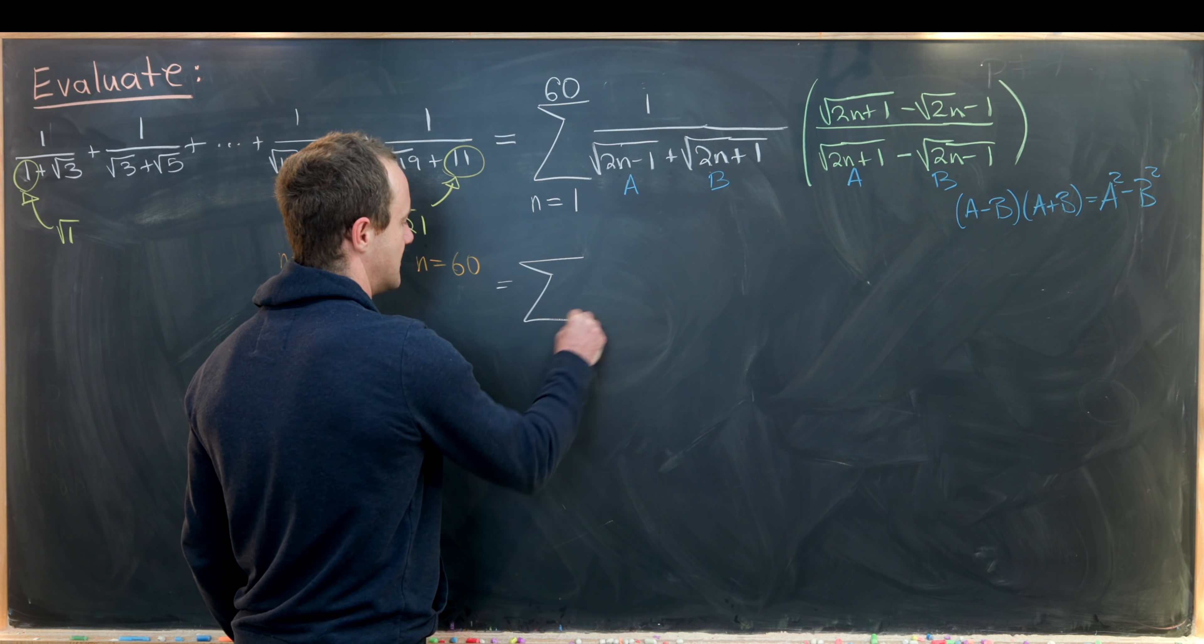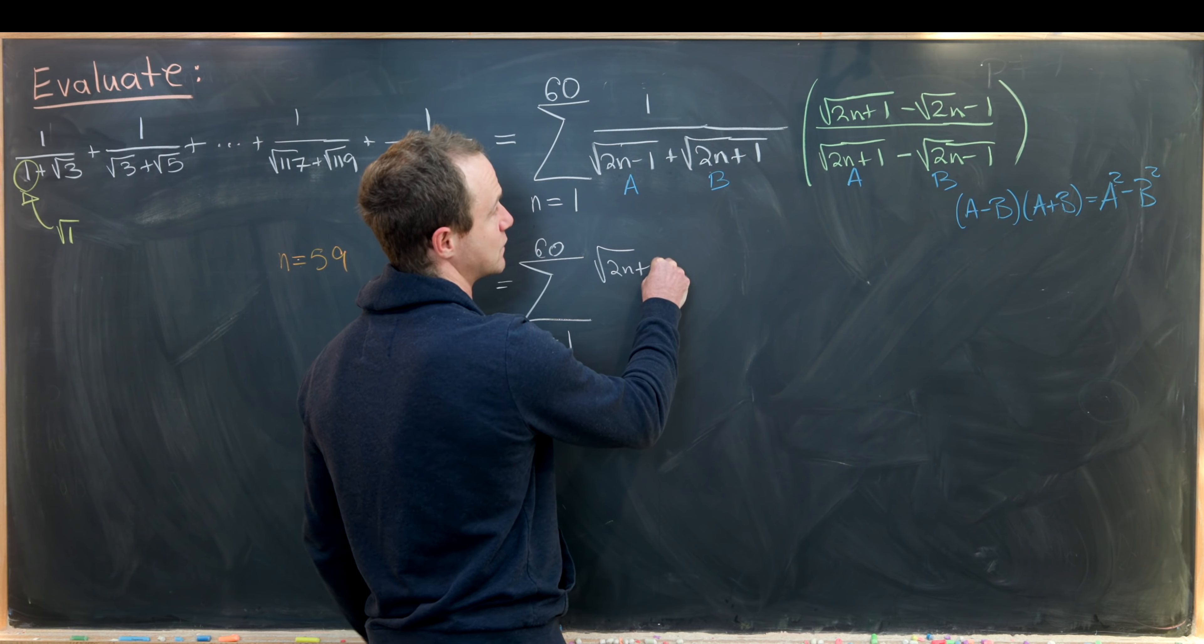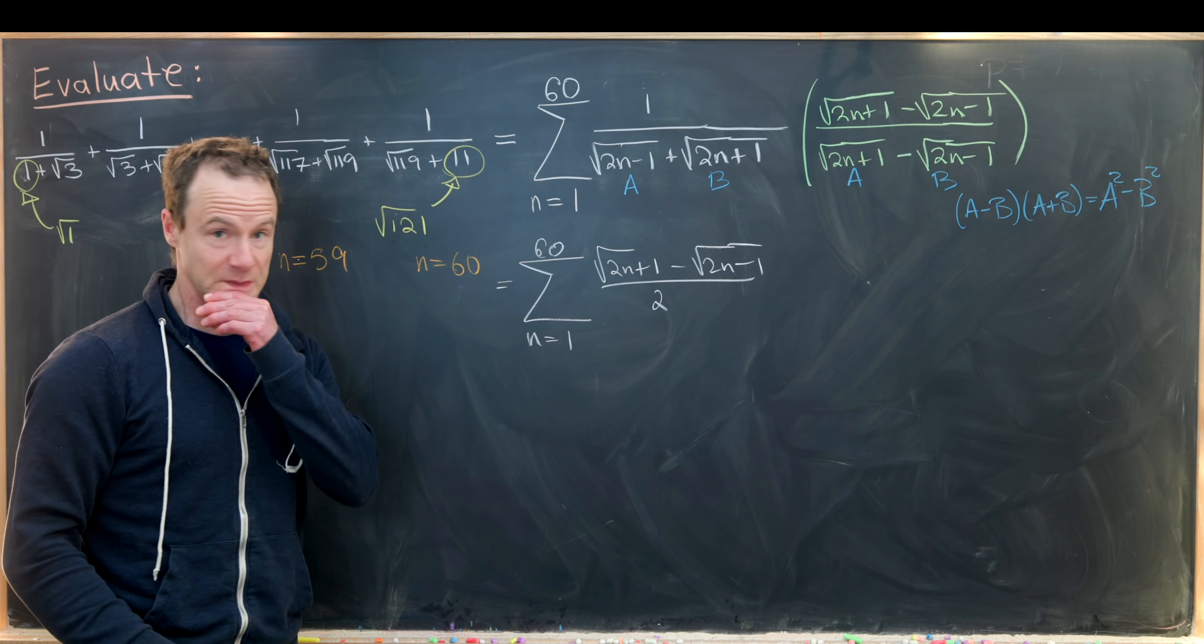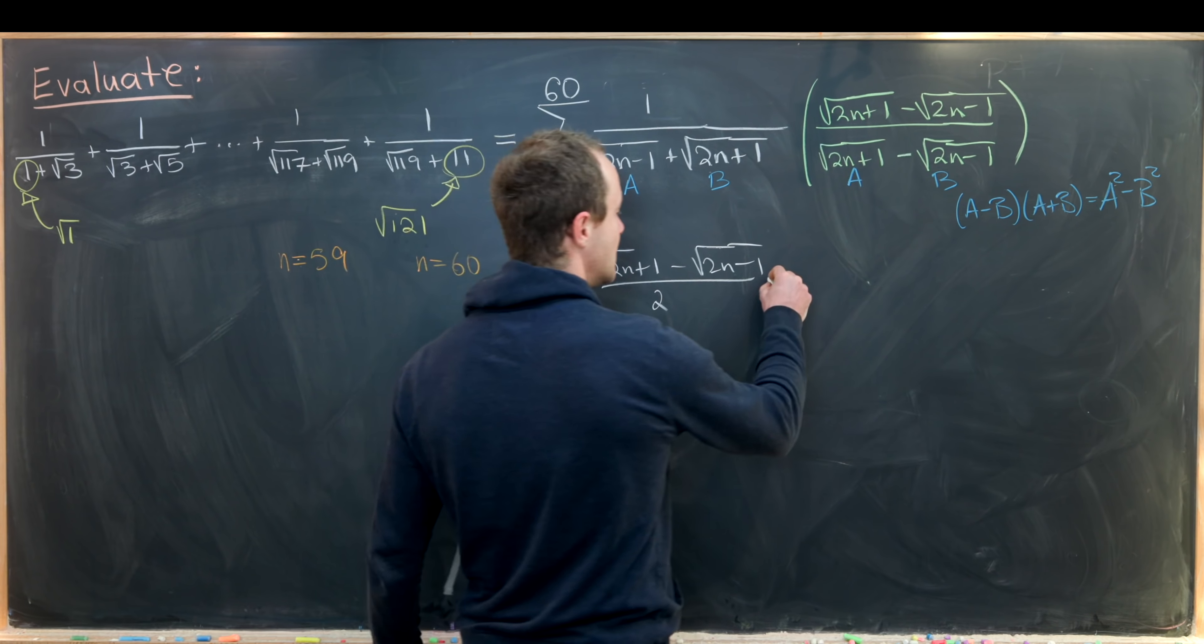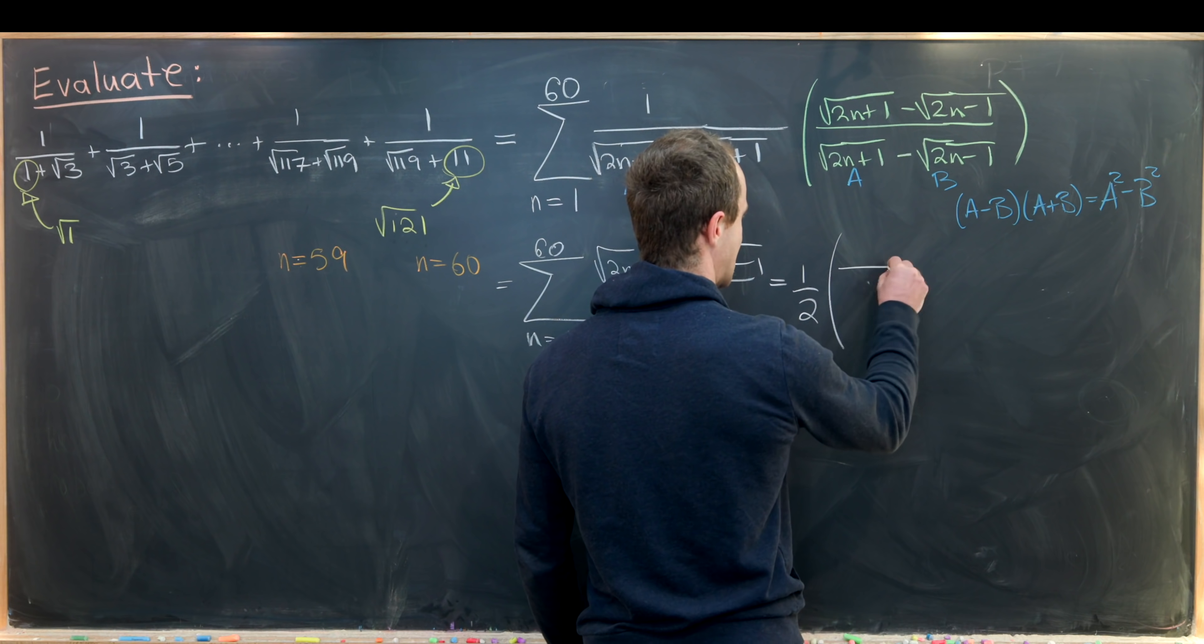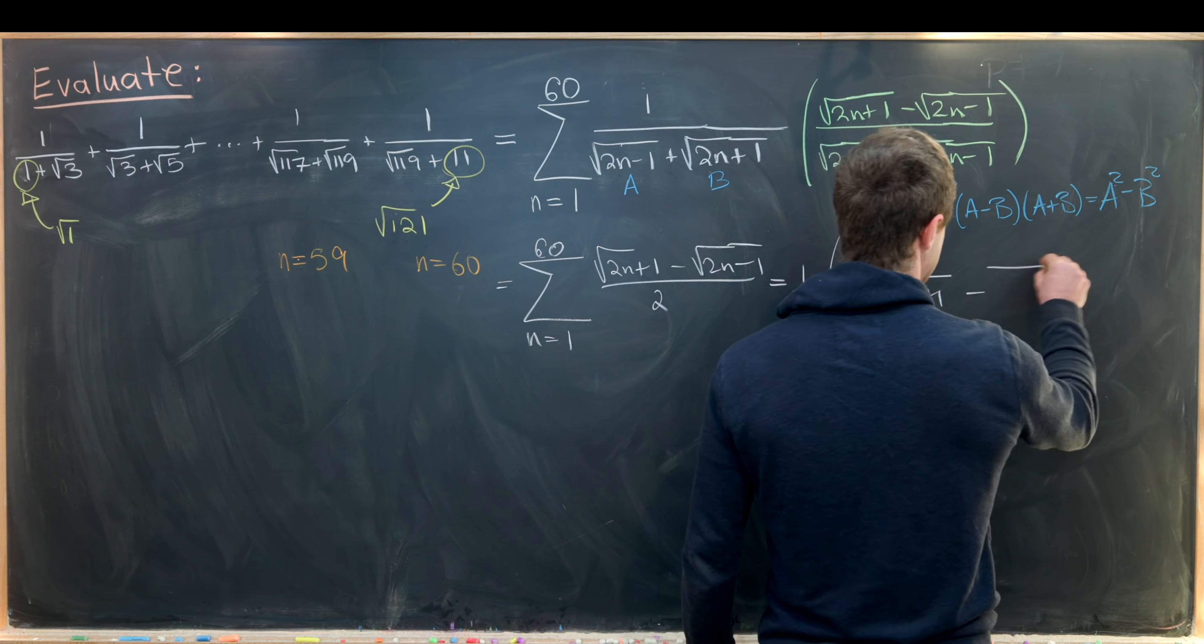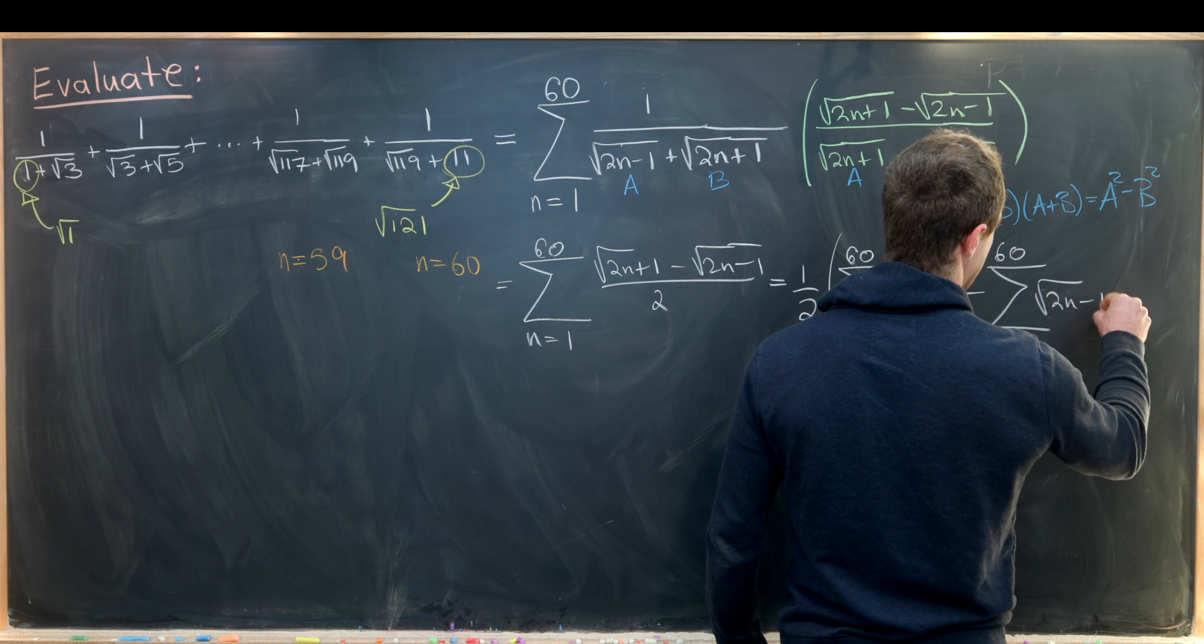So that leaves us with the sum as n goes from 1 up to 60 of the square root of 2n plus 1 minus the square root of 2n minus 1 all over 2. Then we've got a finite sum so I can break this apart into two sums. So I'll have one half, then the sum as n goes from 1 up to 60 of the square root of 2n plus 1 minus the sum as n goes from 1 up to 60 of the square root of 2n minus 1.